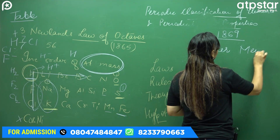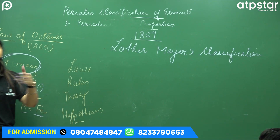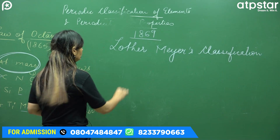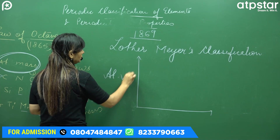Lothar Meyer's Classification. What did they do? They studied physical properties and then plotted a graph. They plotted atomic volume and atomic mass on the graph.